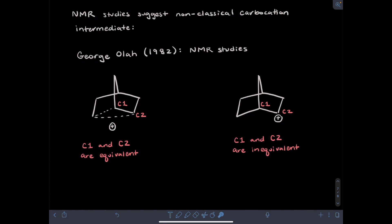Whereas in the classical carbocation, one of these carbons is the carbocation, one is its neighbor, and they should be chemically inequivalent by carbon NMR. What's observed is that carbons 1 and 2 are equivalent, even at really low temperatures, like minus 160 degrees Celsius in carbon 13 NMR spectra. So they give rise to a single signal, and this has been interpreted to support the fact that a non-classical carbocation is the intermediate, and not a transition state.